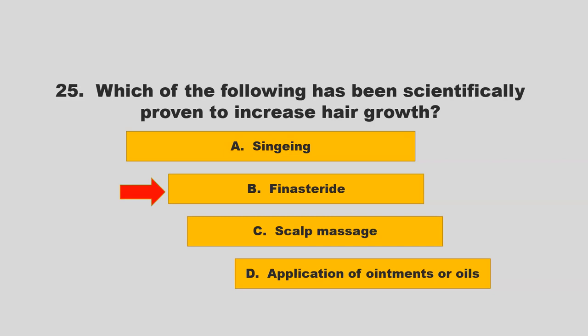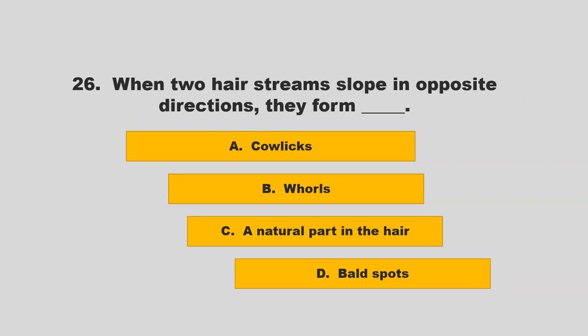When two hair streams slope in opposite directions, they form blank. Is it cowlicks, whorls, a natural part in the hair, or bald spots? If you chose C, a natural part in the hair, you are correct.